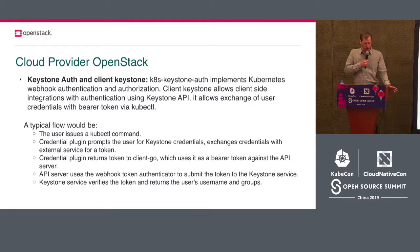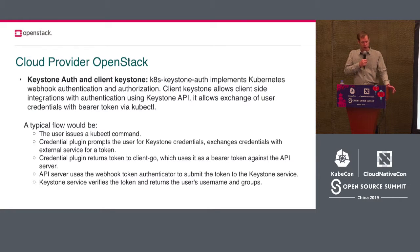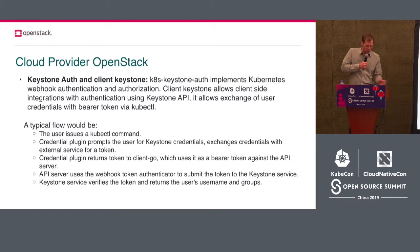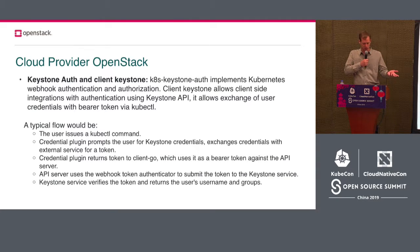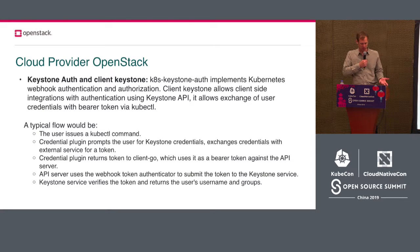Another piece we discussed is the Keystone auth and Keystone client. Kubernetes Keystone auth implements Kubernetes webhook authentication and authorization. Client Keystone allows client-side integrations and authentication using the Keystone API, allowing the exchange of user credentials with bearer tokens via kubectl. A typical workflow: the user issues a kubectl command, the credential plugin prompts the user for Keystone credentials, and exchanges those credentials with Keystone for a token.